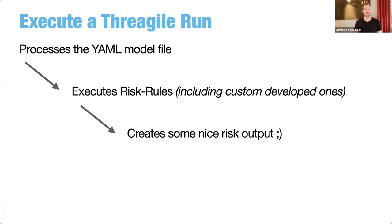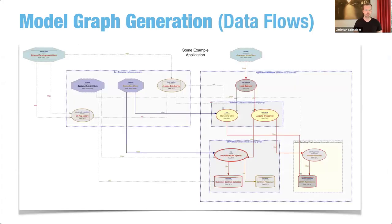At the end, what's a Threagile run? It reads the YAML file, processes it, executes all built-in risk rules including any custom ones you have, and creates nice output. Here's the example model from the Threagile Docker container — the auto-layout generates a visual representation of your architecture. The shapes and colors resemble certain things, especially the line and border colors, showing where sensitive data is flowing or stored so you can easily spot the hot zones that need more protection than other areas of your environment.